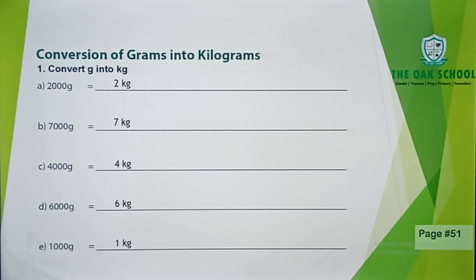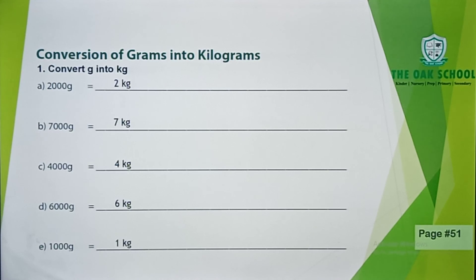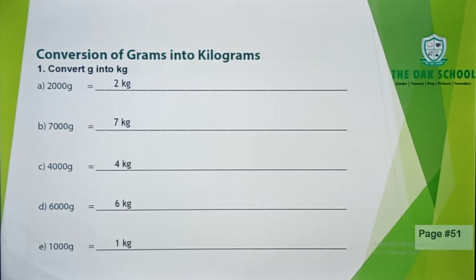Question number 1 on page 51 is the conversion of grams into kilograms. Last time we were making grams, now we will make kilograms. So we will convert grams into kilograms by dividing by 1,000. When you divide 2,000 by 1,000, the answer is 2 kg. B is 7,000 grams, so it will be 7 kg. C is 4,000 grams, so it will be 4 kg. D is 6,000 grams, so it will be 6 kg. E is 1,000 grams, so you divide by 1,000 and the answer will be 1 kg.